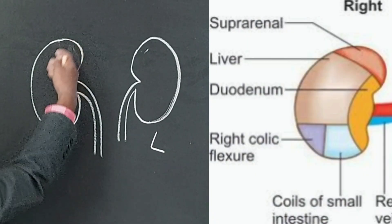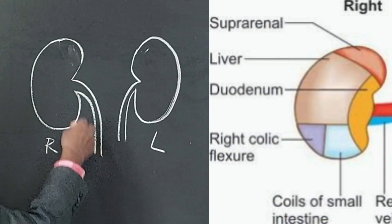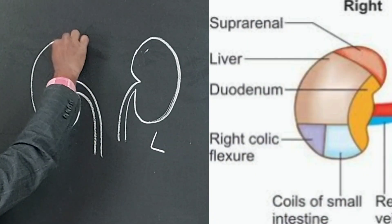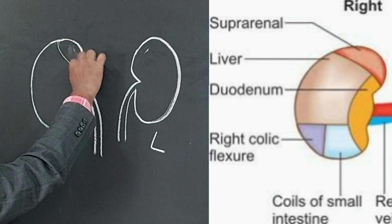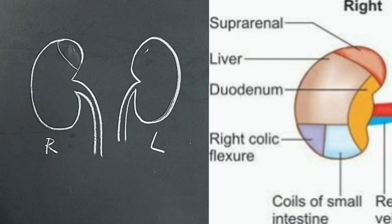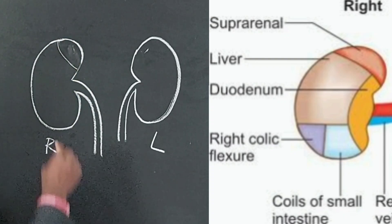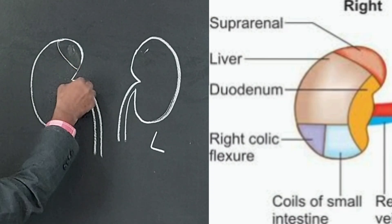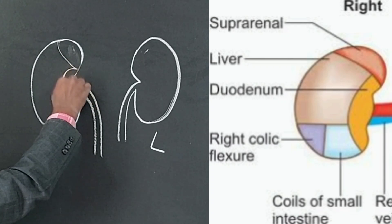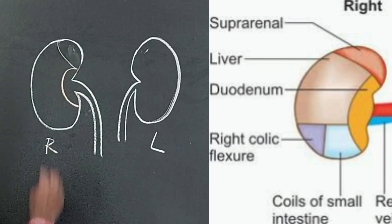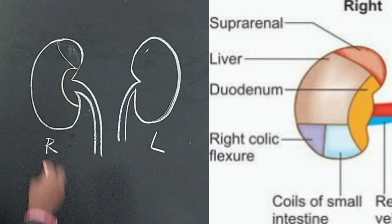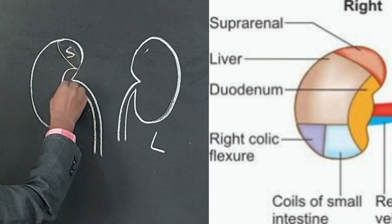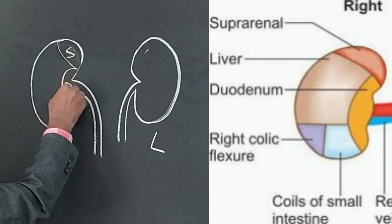On the right kidney, on the anterior surface towards the upper pole, here is one visceral impression — that impression is for the right suprarenal gland. And here, close to the medial border, there is another impression for the duodenum. So this is suprarenal (S) and then duodenum (D).